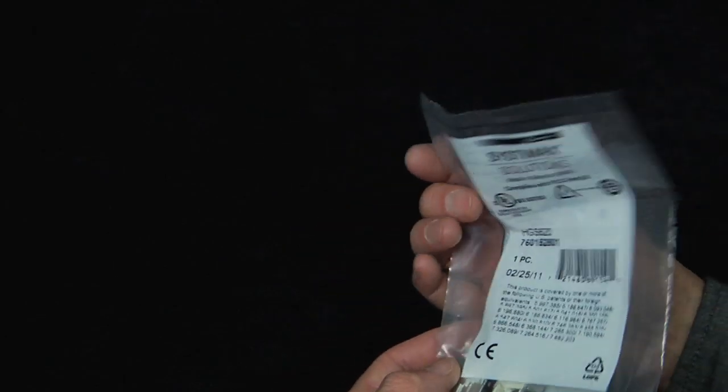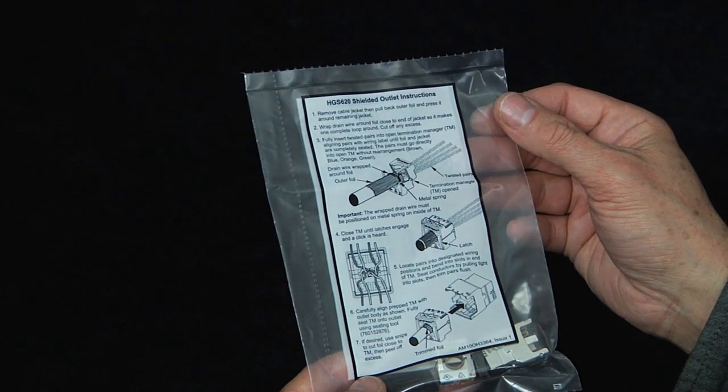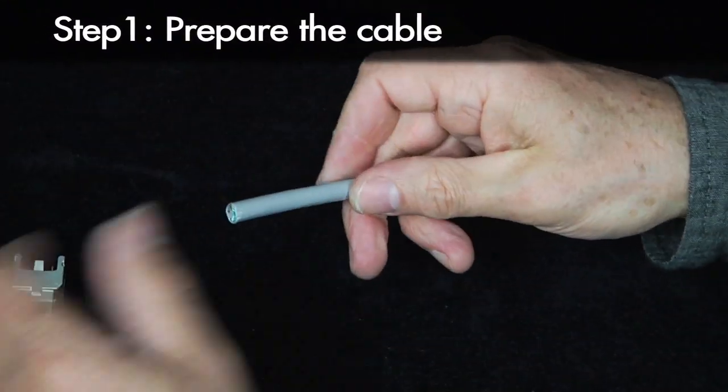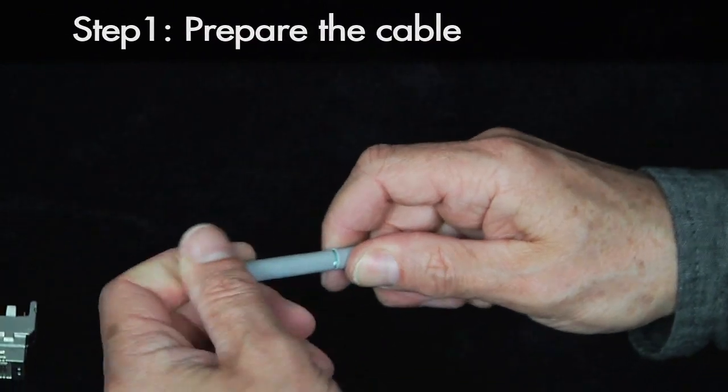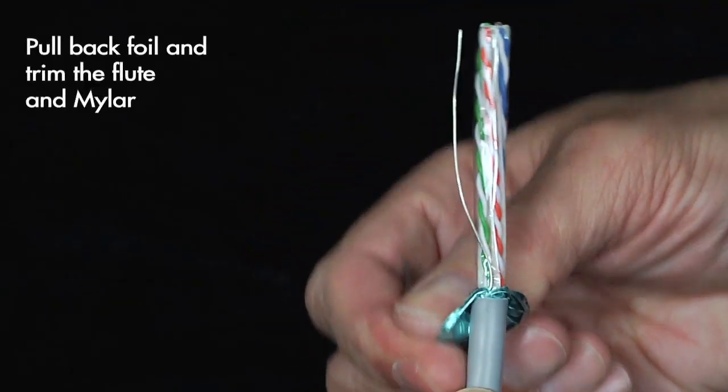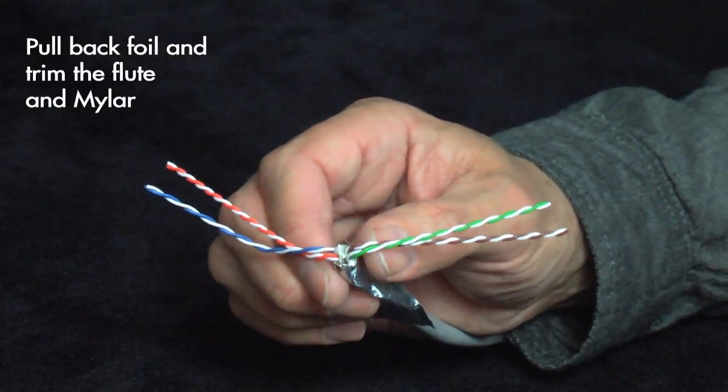To begin the termination process, consult the detailed instructions on the outlet packaging. Start the termination by preparing the cable. Strip the cable about three inches back. Pull the foil back, shiny side out, and trim off the flute and any excess mylar.